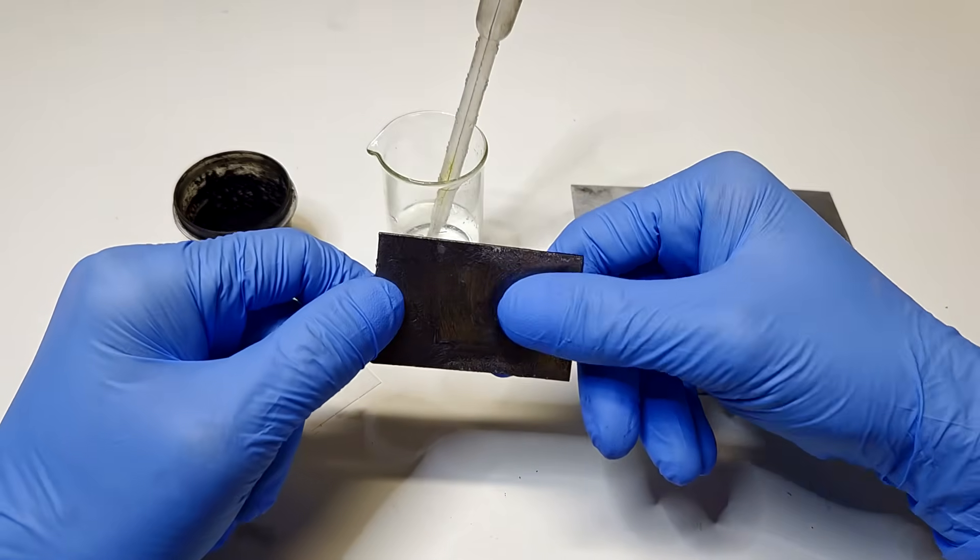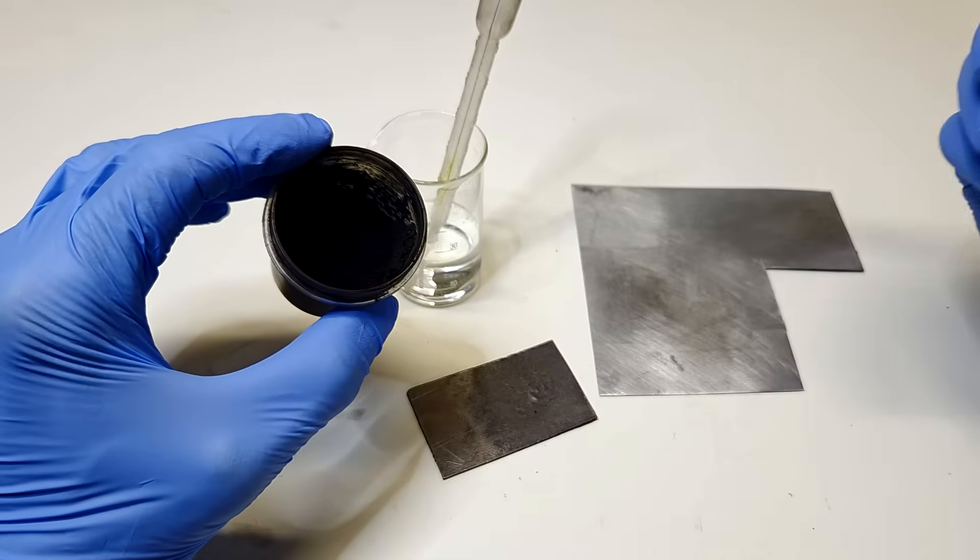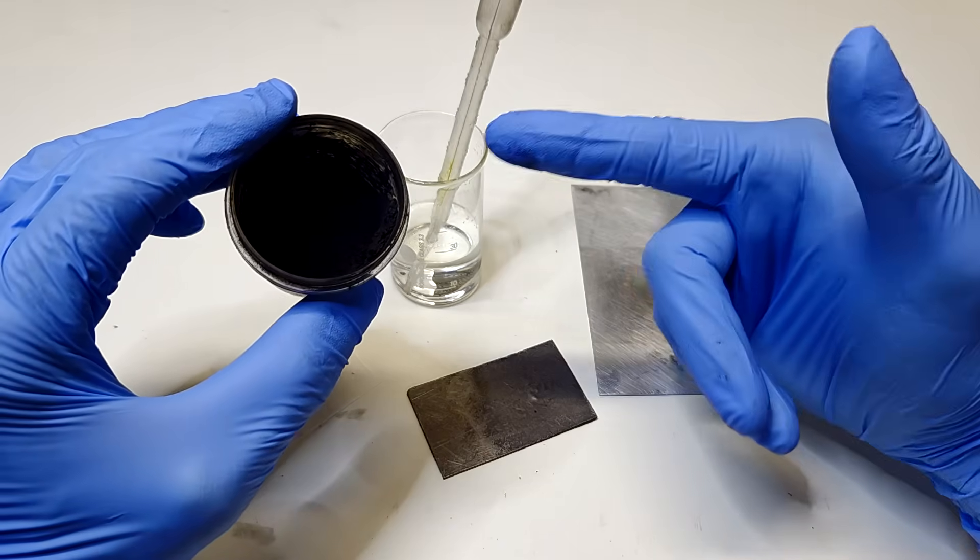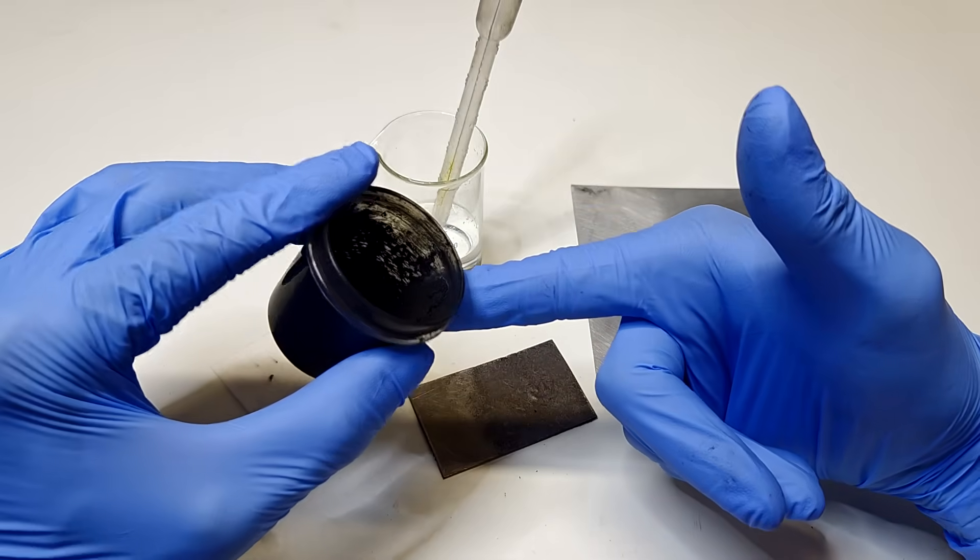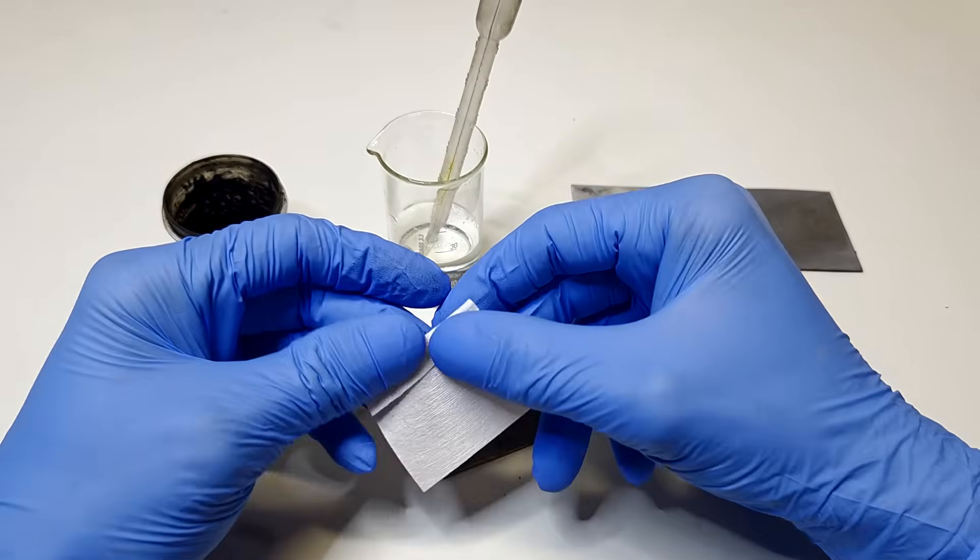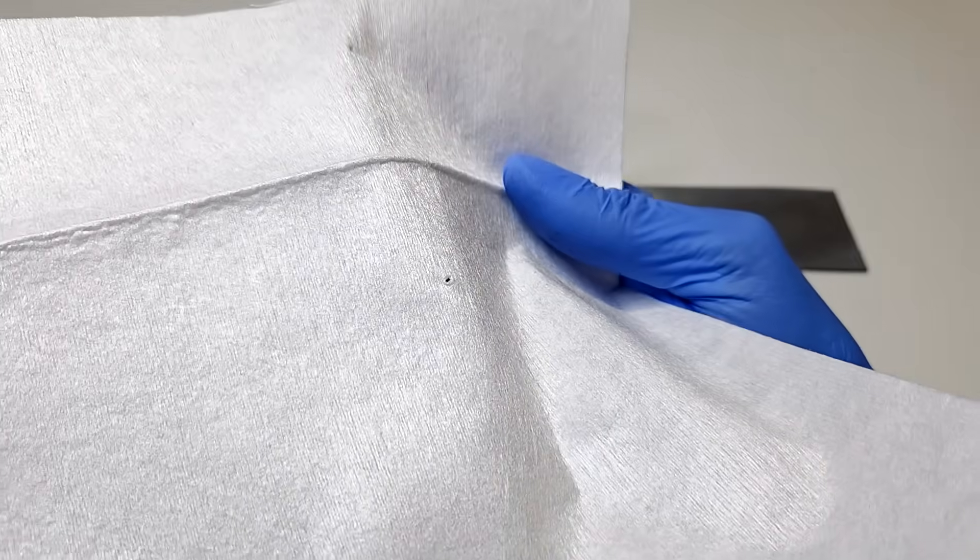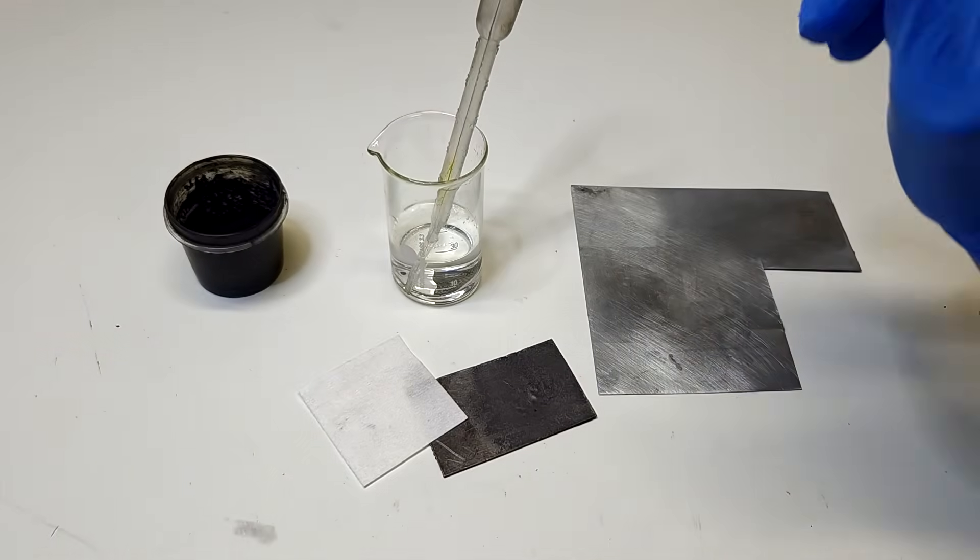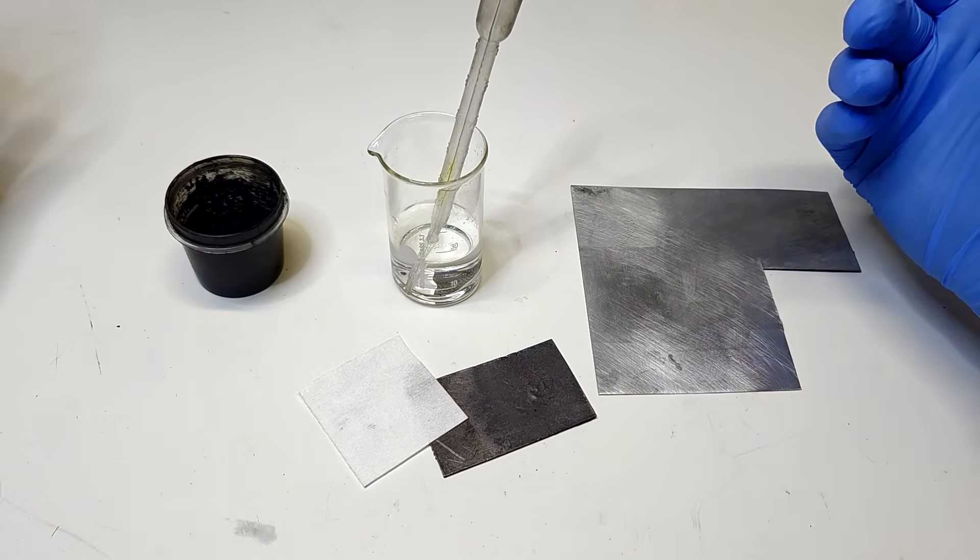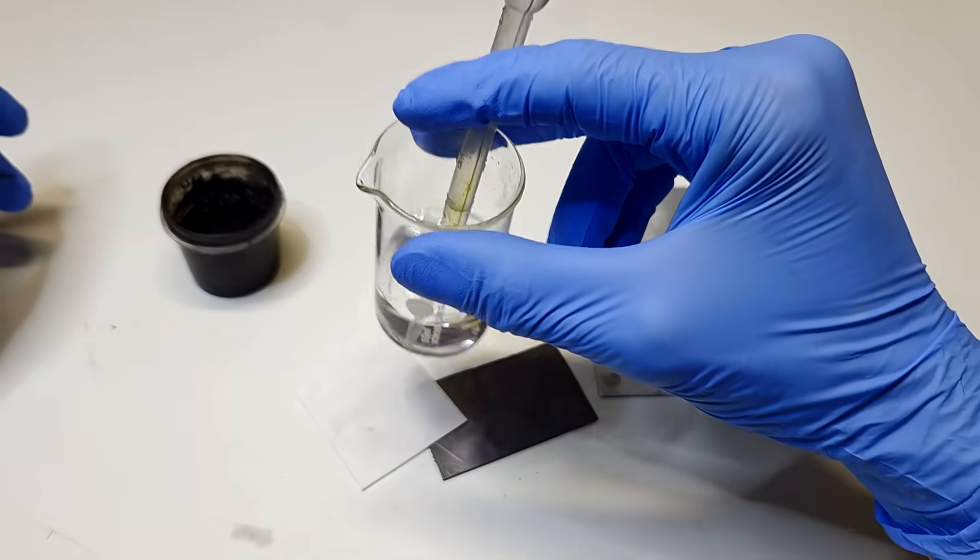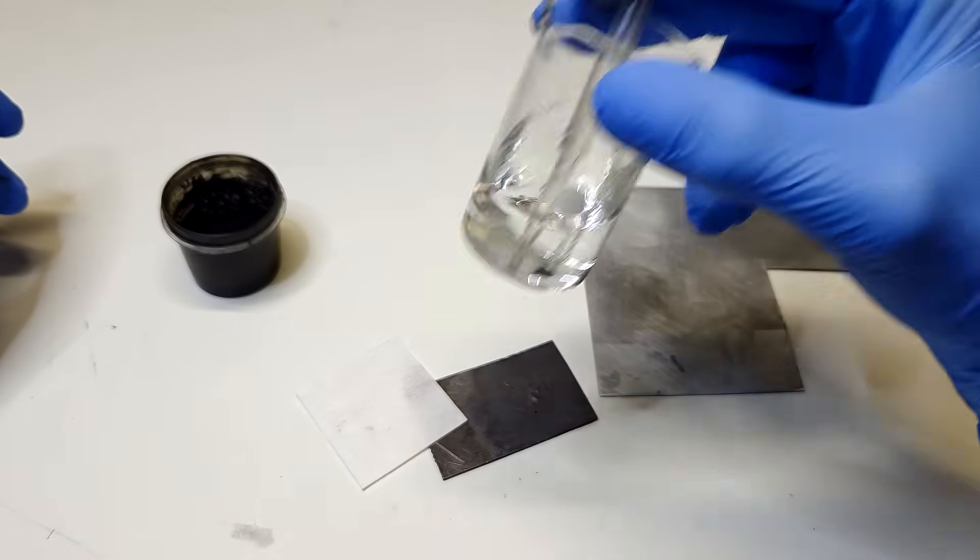Here I have this activated carbon powder. Actually this activated carbon powder is meant for cosmetics. Then here I have some separator. This separator is actually made from kitchen paper. And the electrolyte is actually made from salt and water. So here I mixed together 30 milliliters of water and 5 grams of table salt.